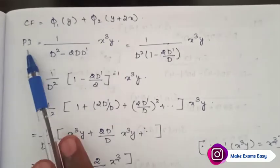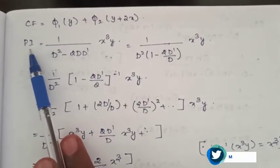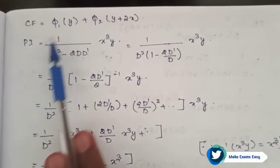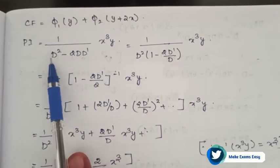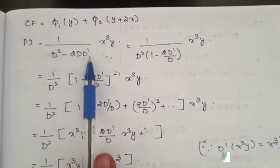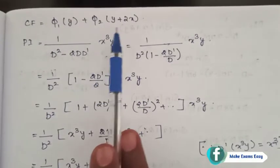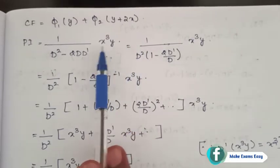Now let us find the particular integral. PI is equal to 1 divided by (D squared minus 2D D') into x cubed into y, which is the right side of the equation.